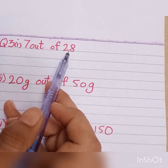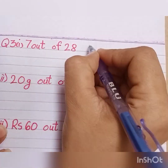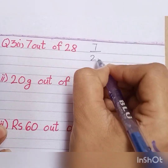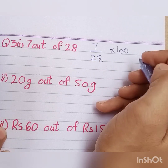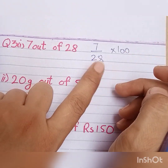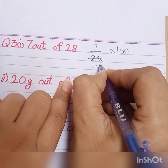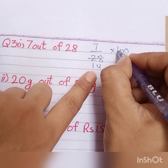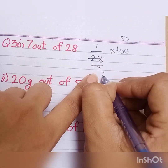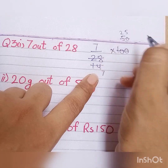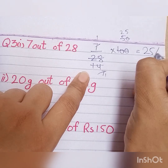First, we have 7 out of 28. So we write it as 7 by 28 multiplied by 100. There is a cross cutting between 28 and 100 because both are even numbers. In the table, 28 becomes 14, then 7, and 100 becomes 50, then 25. So the answer is 25 percent.